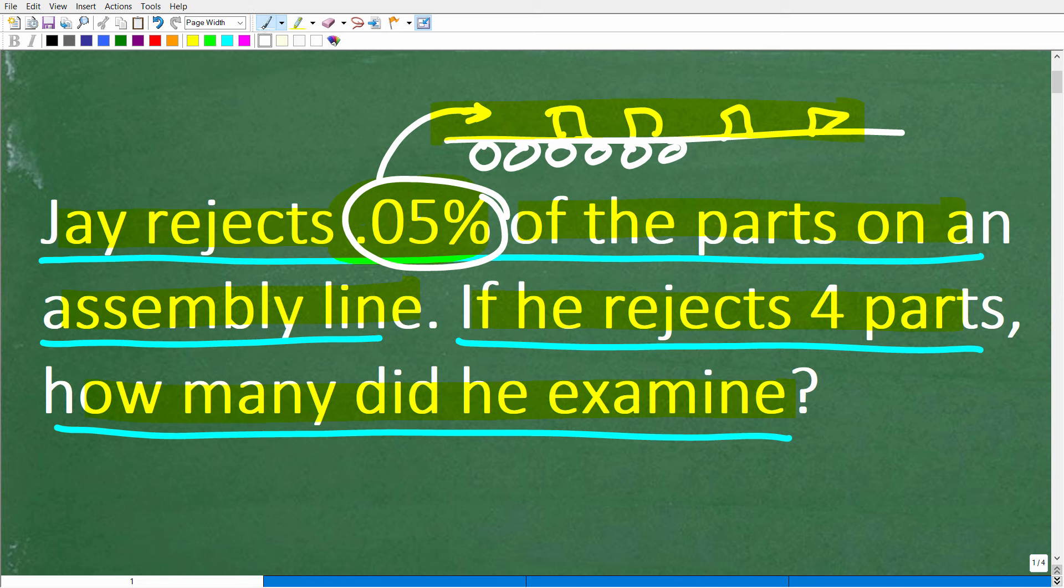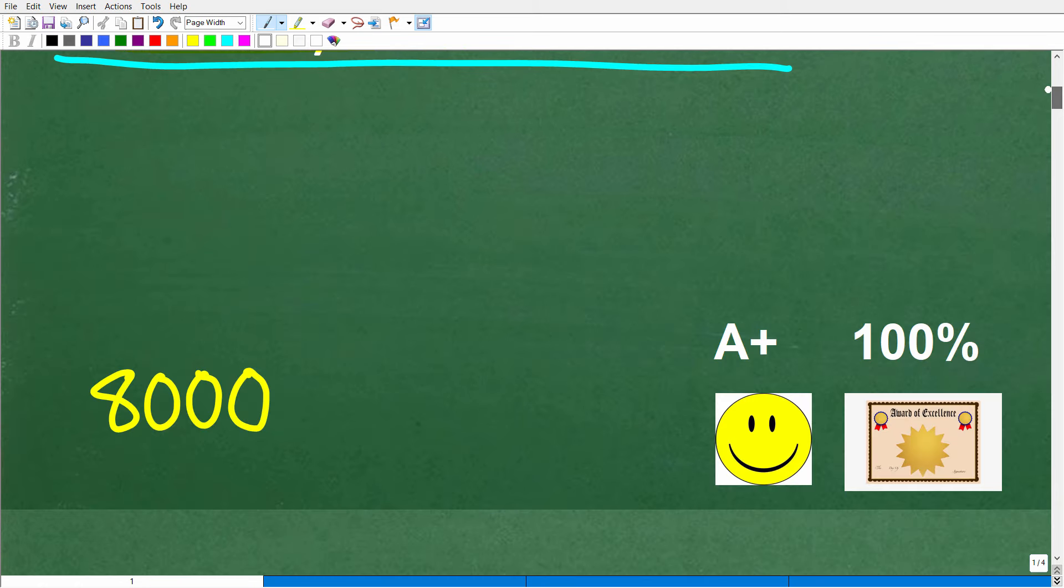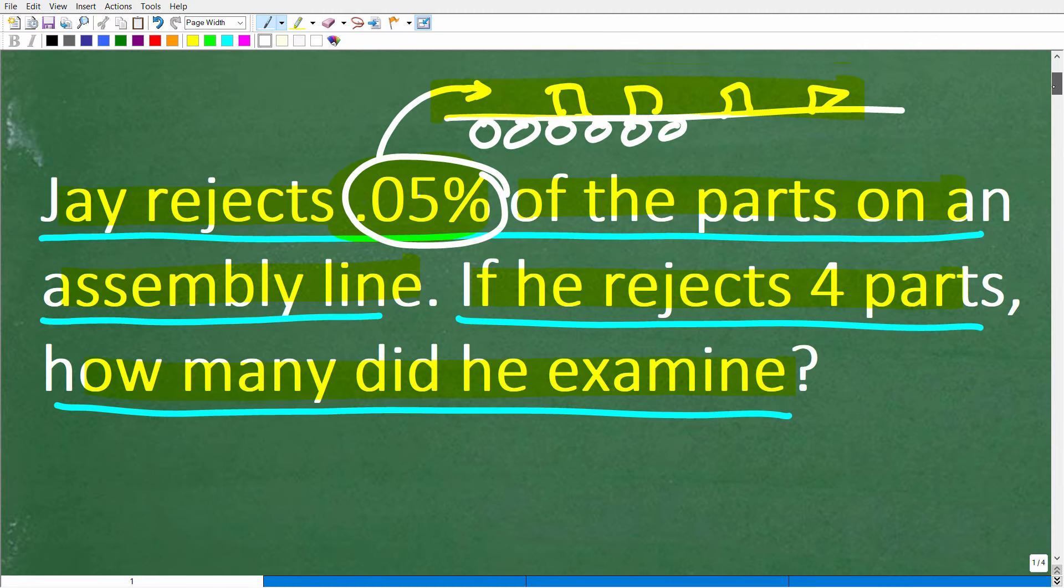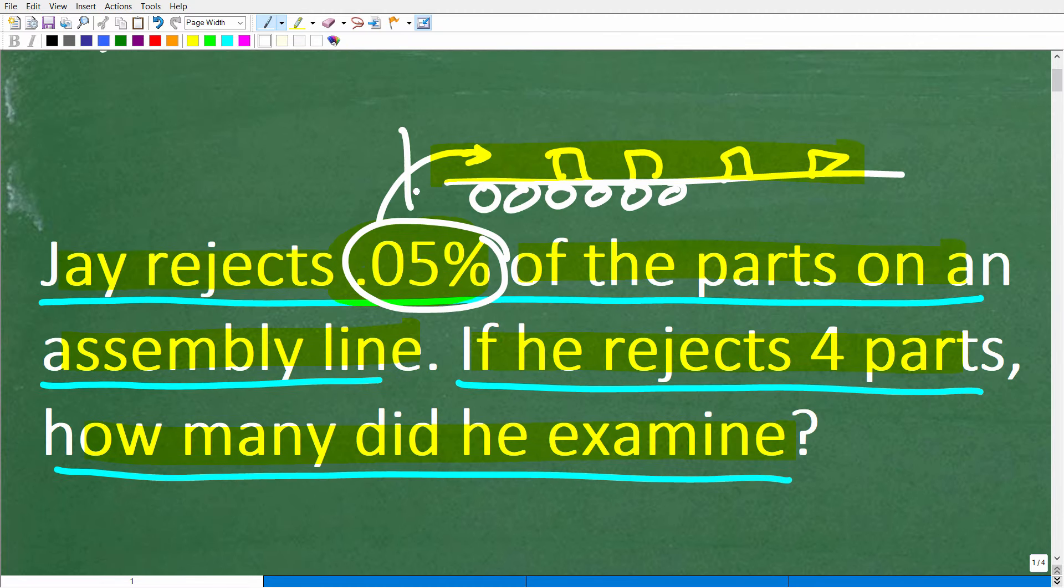Alright, so hopefully this is pretty clear. And better yet, hopefully you got the right answer, which is 8,000. Now, if you got this right, that is fantastic. In my book, you definitely get a happy face and A+, 100%, and a certificate of excellence for being a certified professional expert in the area of solving basic percent math word problems.